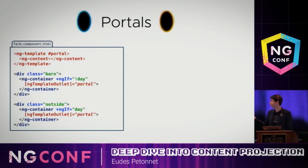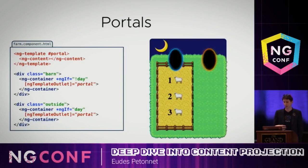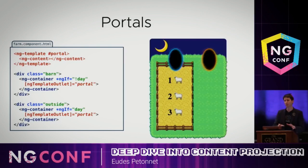We have our barn and our outside. Instead of having two ng-contents with ng-if, we have two ng-template outlets with ng-if. During the day, outside is stamped by the second template outlet. Then night comes, the second template outlet disappears, but the first one gets the template ref and puts it inside the barn. So now they're correctly inside the barn. That's it.